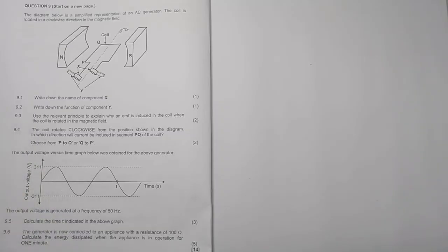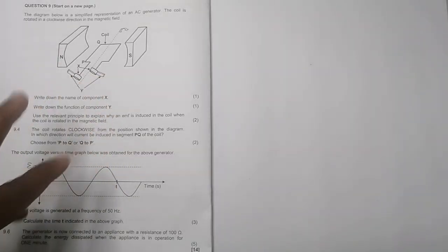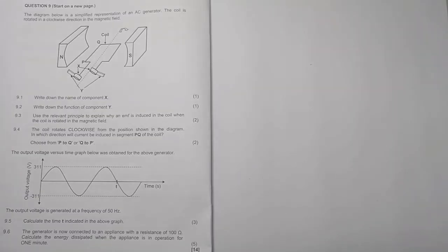In this case they say use the relevant principles to explain why an EMF is induced in the coil when the coil is rotated in the magnetic field. Just to remind yourself there, that remember this is basically an explanation of Faraday's law, which simply states that the EMF is induced because there is a change or it's directly proportional to the rate of change in magnetic flux. So in this case, the moment that we have a rotation, when it rotates in the magnetic field, there is a change in the magnetic flux which ultimately induces the current.